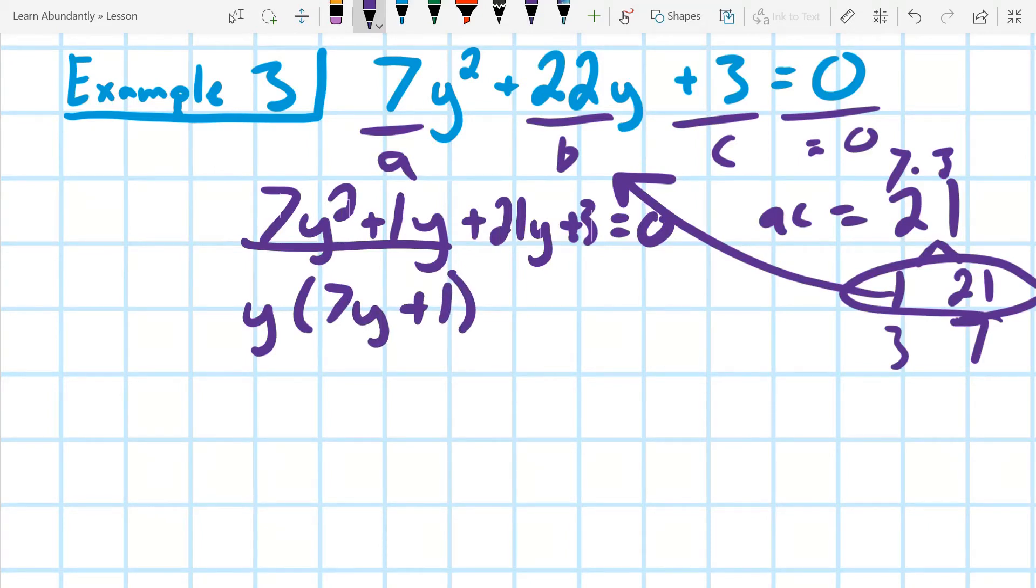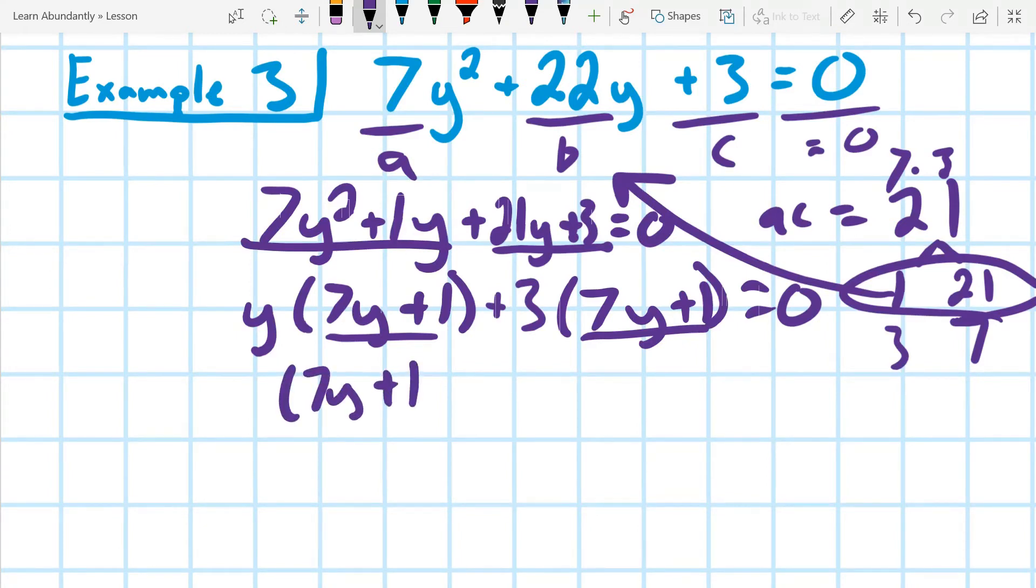The second one, I can't take out a 7 either, but I can take out a 3, a positive 3, and that would leave me with 7y plus 1, and it's still equal to zero. Notice that both of these are the same. That means I did my grouping correctly, and that means my two factors are 7y plus 1, and y plus 3, and they equal zero.